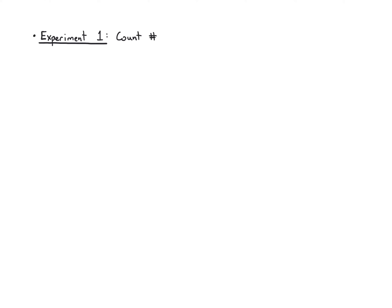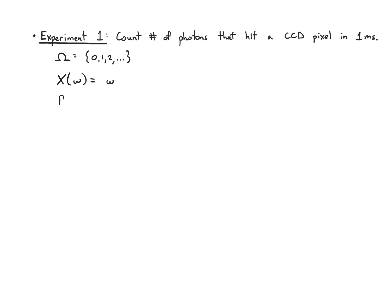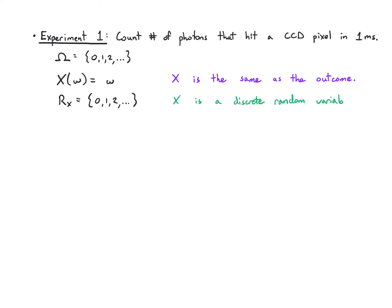Let's do some examples. In experiment one, I'm counting the number of photons that hit a CCD pixel — maybe on a digital camera — in one millisecond. The sample space is 0, 1, 2, and so on, and the random variable X is that number of photons, so its range is also 0, 1, 2, and so on. Here X is the same as the outcome, and X is a discrete random variable because it is countable.